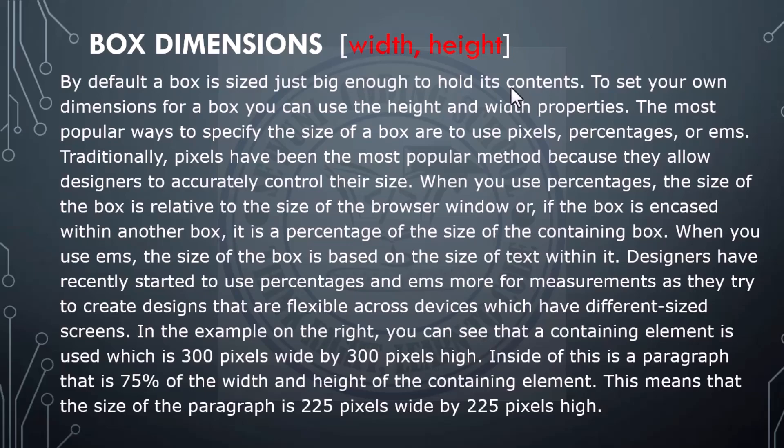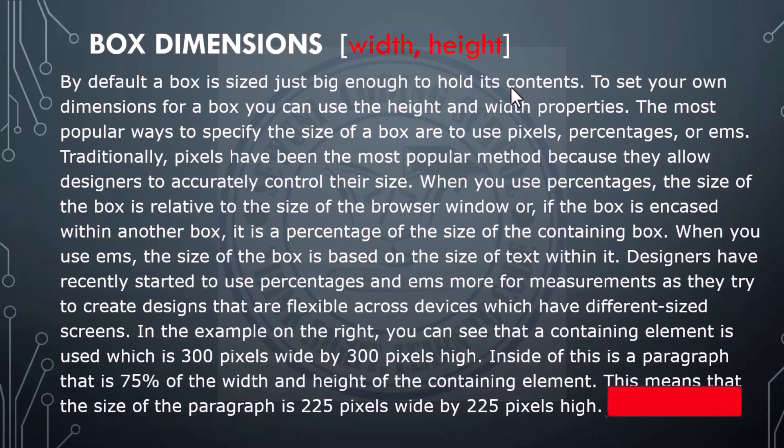You can do this by using pixels, percentages, or ems. Traditionally, pixels have been the most popular method because they allow designers to accurately control size. When percentages are used, the size of the box is relative to the size of the browser, and if the box is encased within another box, it is a percentage of the size of the containing box. When ems are used, the size of the box is based on the size of the text within it. Designers have recently started to use percentages and ems more, as they try to create designs that are flexible across devices with different screen sizes.